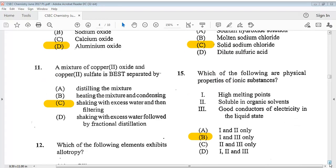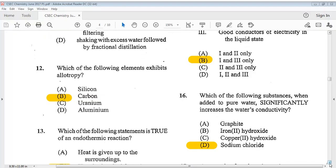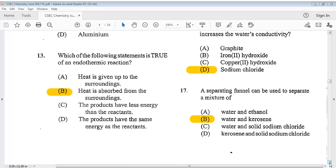Question 11 says, a mixture of copper 2 oxide and copper 2 sulfate is best separated by? The answer is C, shaking with excess water and then filtering. Question 12 says, which of the following elements exhibits allotropy? The answer is B, carbon. Question 13, which of the following statements is true of an endothermic reaction? The answer is B, heat is absorbed from the surroundings.